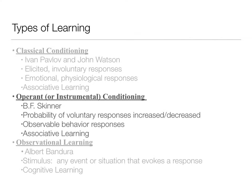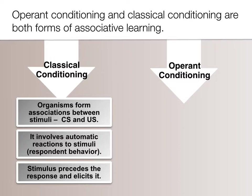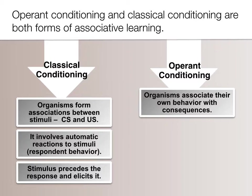Operant conditioning is still a kind of associative learning — associations being made between two things — but it's about voluntary responses. The stimulus comes after the behavior instead of before, which is another key difference from classical conditioning. Organisms are making associations between their own behavior and the consequences of that behavior, which aren't necessarily negative; they can also be positive reinforcing things.